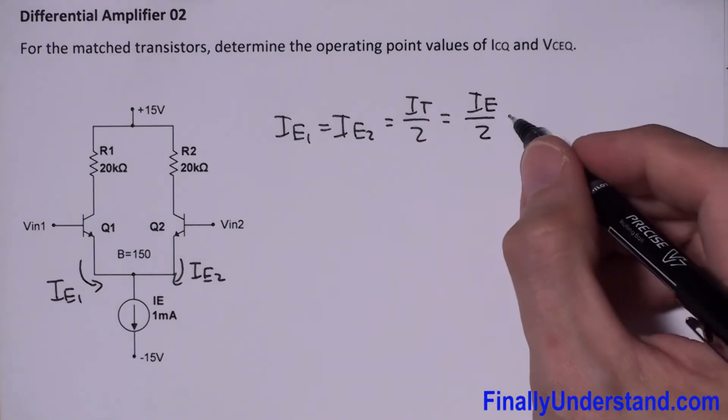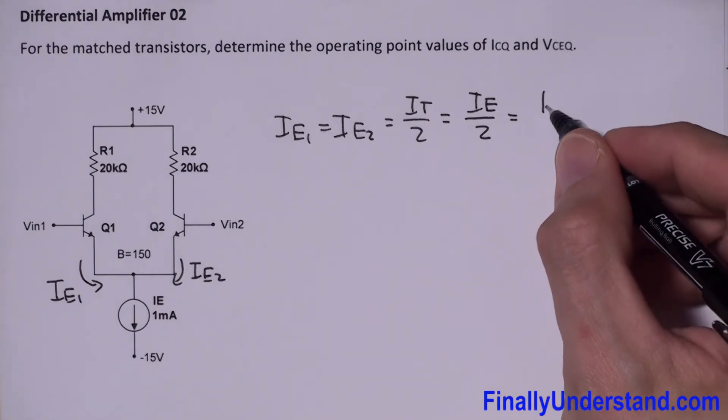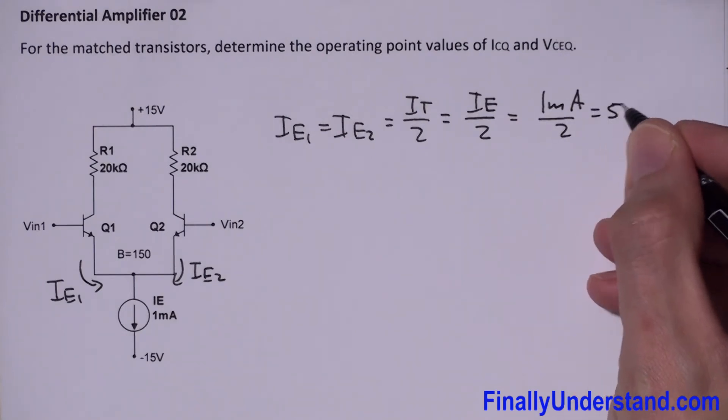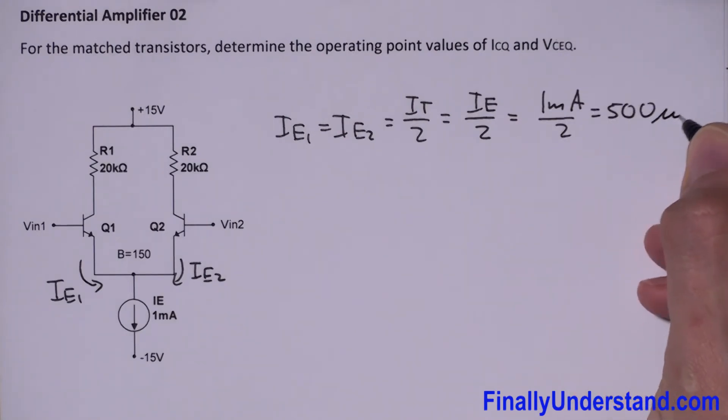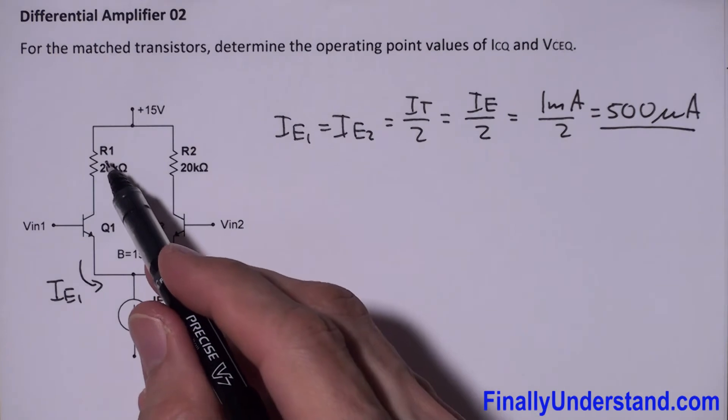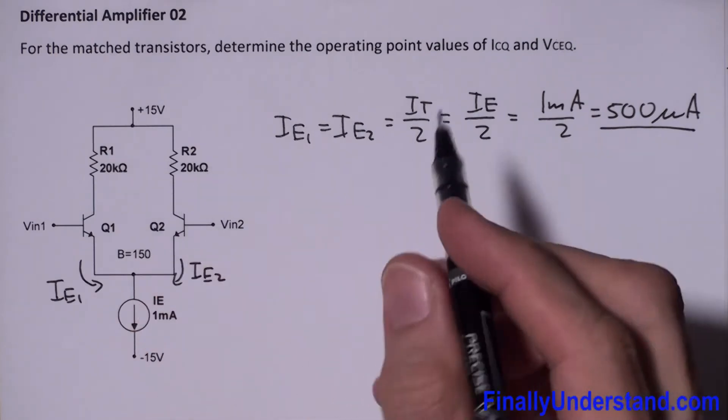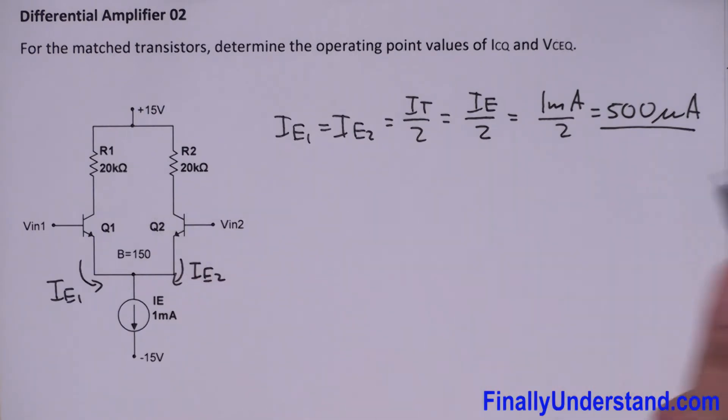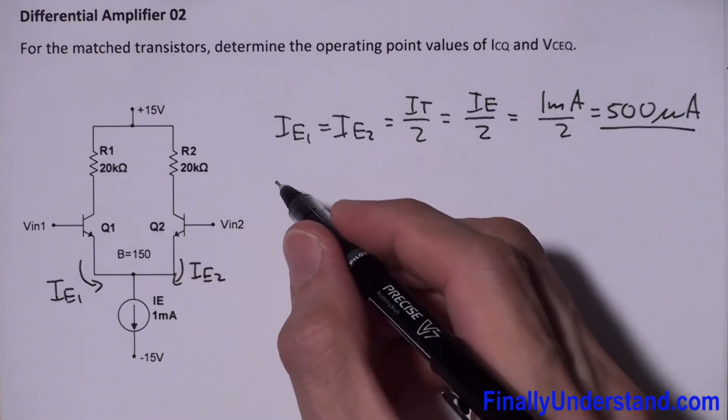So in this case, this is my IE divided by 2, which equals 1 milliamp divided by 2, which equals 500 microamps. So each resistor R1 and R2 is going to have current going through it equal to 500 microamps.